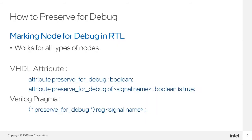A quick look at the preserve for debug RTL syntax can be seen here. To mark a node to be preserved for debug in a VHDL file, users can add the following attribute code lines to their RTL files. For Verilog, the same can be done but with the pragma syntax that can be seen below.